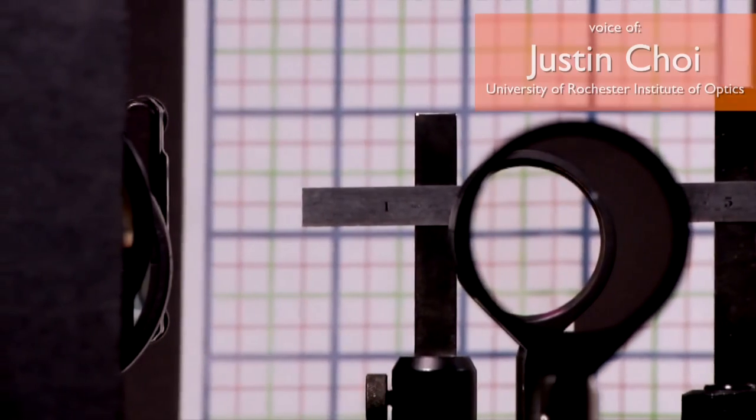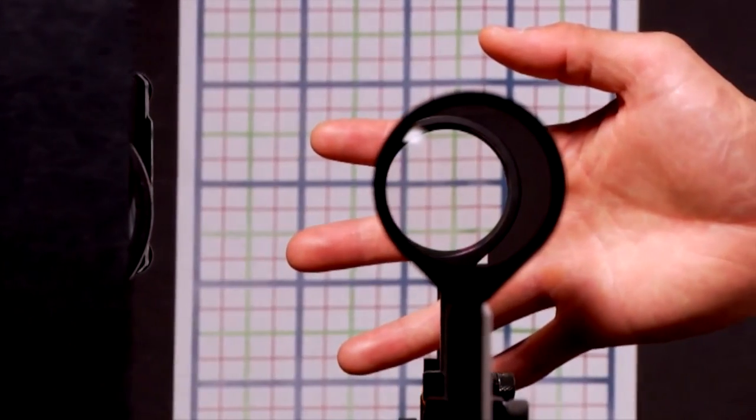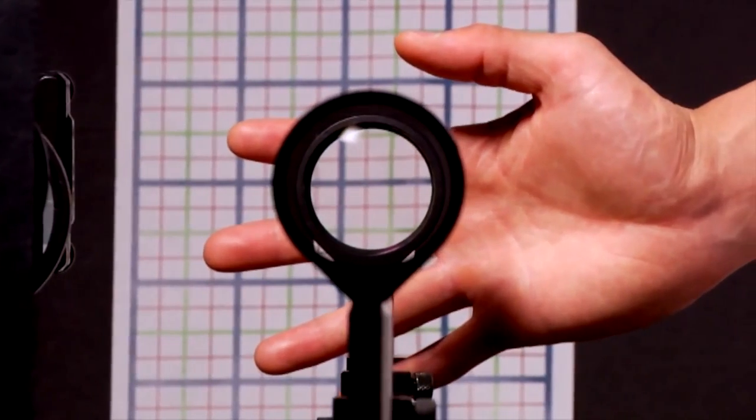So if you have rays that go at different angles, the cloaking device still cloaks it while what you see in the background is shifted without any distortion.